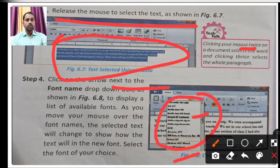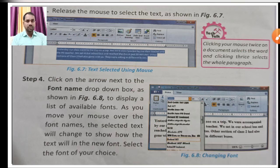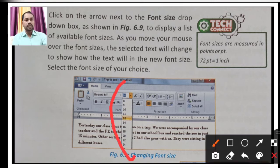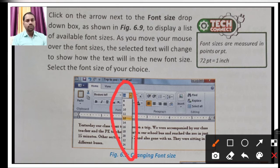Ctrl+A selects the full document. If you have any doubts up to this point, ask me through live chat. Next step: click on the arrow next to the font size drop-down box. The paragraph is already selected; as you choose a font size — for example 14 or 16 — it will show on your screen. You can also take a larger size according to your need. As you move the mouse over font sizes, the selected text will change to show how it will look in that size. Select the font size of your choice.